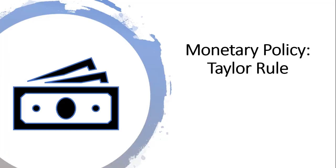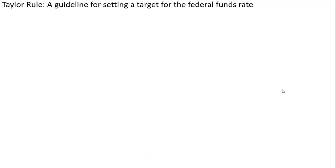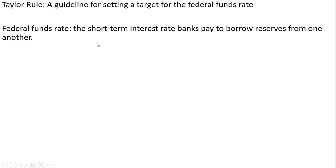Hello. In this video, we're going to discuss the Taylor Rule of Monetary Policy. The Taylor Rule is a guideline for setting a target for the federal funds rate. The federal funds rate is the short-term interest rate banks pay to borrow reserves from one another.